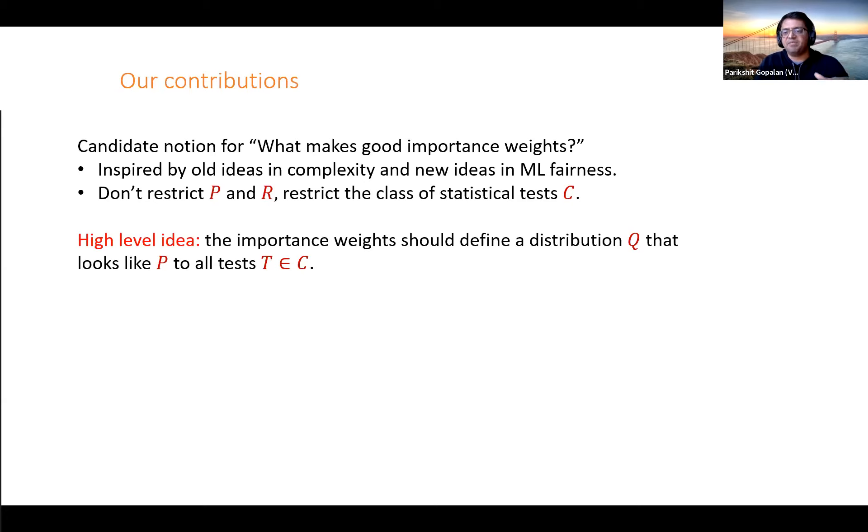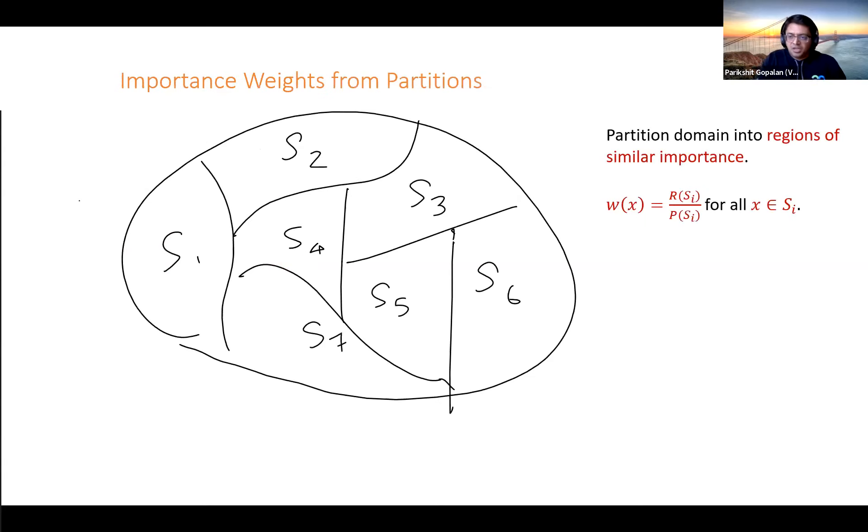Instead, we restrict the class of statistical tests or sets for which we're hoping to give a guarantee. The high-level idea is to define a reweighting of P that gives us a new distribution Q, which even though it's not exactly equal to R, it looks just like R to every test in this set. These things are practically indistinguishable. This is what we're going for.